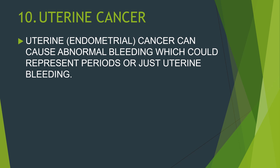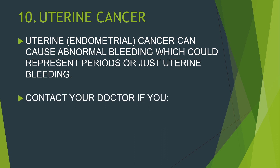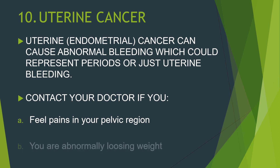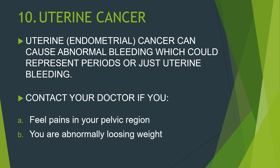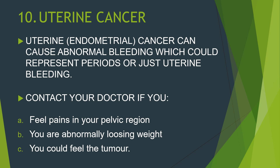Another cause is uterine cancer. Endometrial cancer can cause abnormal bleeding, which could represent irregular periods or abnormal uterine bleeding. If you experience pains in your pelvic region, abnormal weight loss, or feel a tumour in your pelvic region, please contact your doctor.